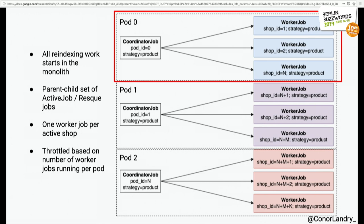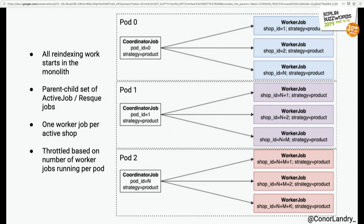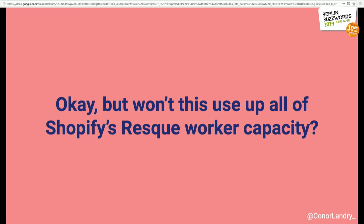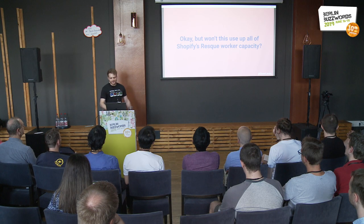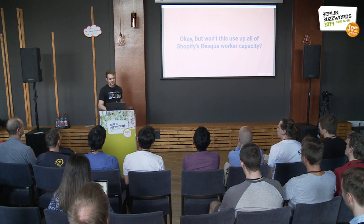Each coordinator job keeps track of its progress — the worker job ticks the progress bar for each coordinator. Once the re-index is complete, we should see 100% of jobs completed, see which ones failed, and retry those. By doing that, we can set SLOs based on what percent of a pod's shops are re-indexed. Even with limiting to 300 jobs at a time, this strategy won't work with Resque alone because we'd create too many jobs and Resque is not a scheduling system — it's just a job-working system.